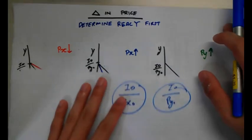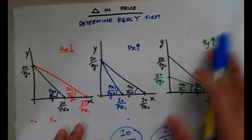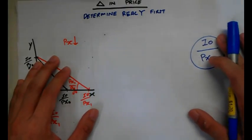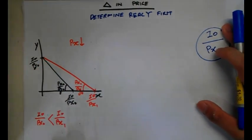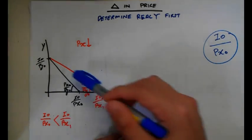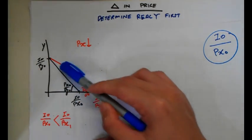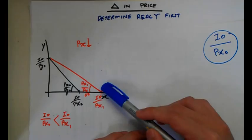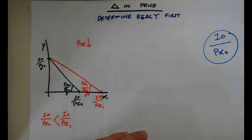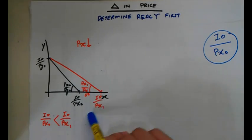Let's say the price of X has changed — there are three possible outcomes. Starting with the one on the extreme left: if the price of X has decreased, it causes the budget constraint to rotate outwards, because we can buy more when the price of X has gone down. The notations were covered in the previous video.